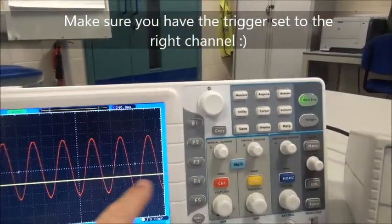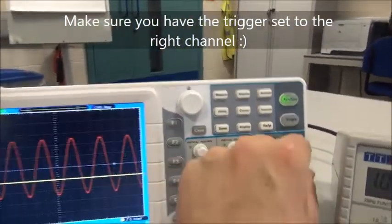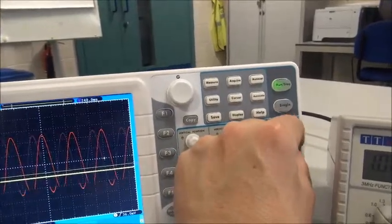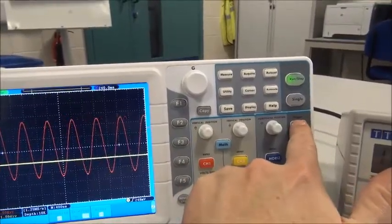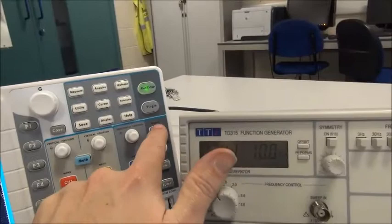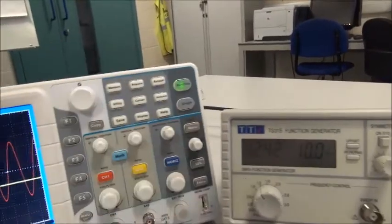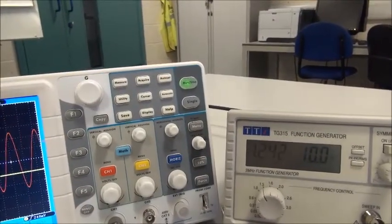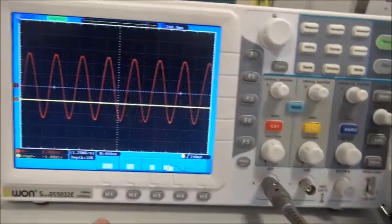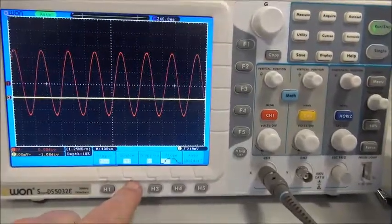And the trigger cursor will be on the screen somewhere. We're going to need to move that up. The other thing you want to do, you definitely want to check the trigger menu, check that the trigger is set to channel 1. And we can see on our scope that the source is channel 2 there.